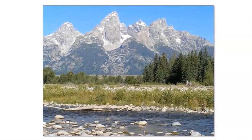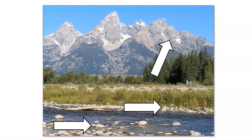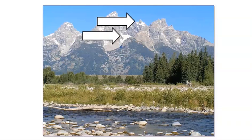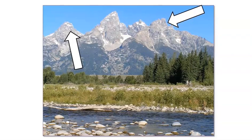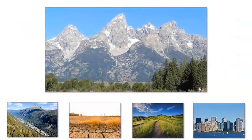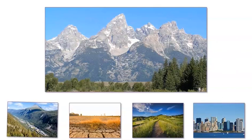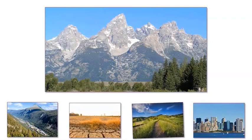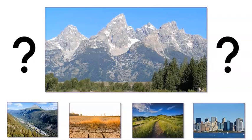Look at this picture of another part of Grand Teton National Park. How would you describe the land in this picture? I think the land looks really rocky. It looks like snow covers some of the rock. Some parts of the land look really tall and pointy. How would you describe the land where you live? Maybe there are mountains where you live, or maybe the land is flatter. Does the land where you live have hills? Do you live in a city by the water? Land has many different shapes. Are you ready to visit other national parks with me to help describe the shape of the land?